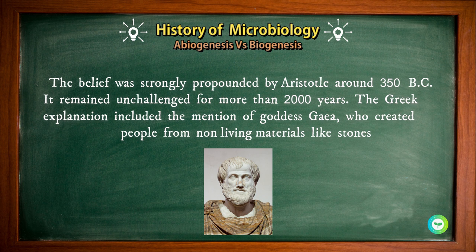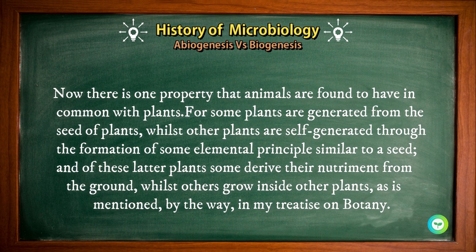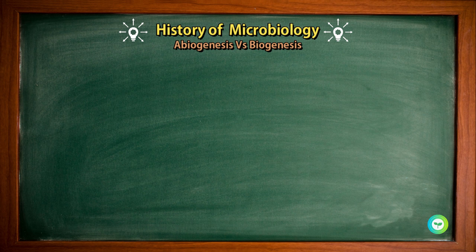The Greek explanation included the mention of Goddess Gaia, who created people from non-living material like stones. Now, there is one property that animals are found to have in common with plants. For some plants are generated from the seeds of plants, whilst others are self-generated through the formation of some elemental principle similar to a seed. Of these latter plants, some derive their nutrient from the ground whilst others grow inside other plants, as mentioned in Aristotle's treatise on botany.